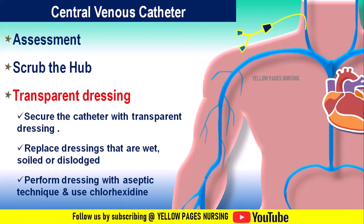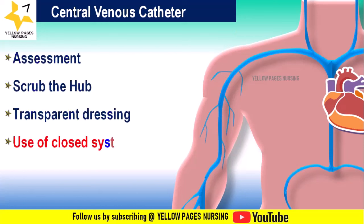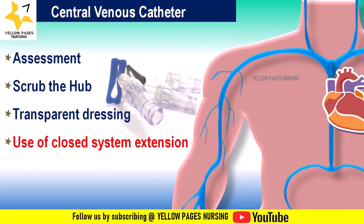Next is use of a closed system extension. Since a central line has multiple lumens and critically ill patients may have multiple infusions, there will be a need for extra lumens. Select a closed system two-way or three-way extension depending on the number of infusions. Remember: more ports means more chances of infection.